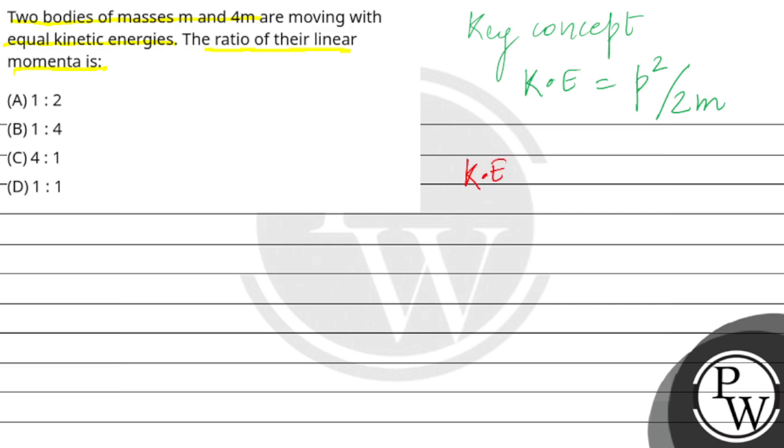Kinetic energy for mass m equals kinetic energy for mass 4m, and we have to find the linear momentum ratio. So here,